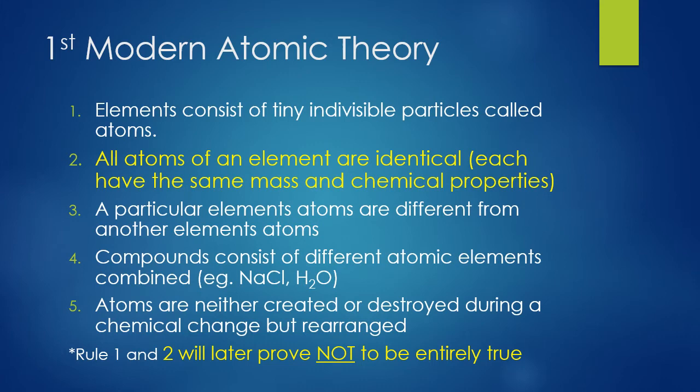Bringing it back to Dalton's first modern atomic theory: postulate two said all atoms of an element are identical. That is not entirely true because of isotopes. Since atoms of the same element can differ in their mass numbers, they wouldn't be identical — their mass numbers can be different from one atom to another.